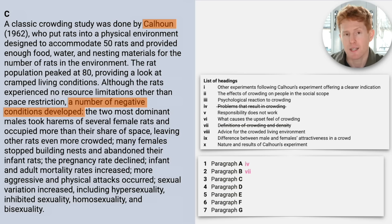A classic crowding study was done by Calhoun, 1962, who put rats into a physical environment designed to accommodate 50 rats and provided enough food, water, and nesting materials for the number of rats in the environment. The rat population peaked at 80, providing a look at cramped living conditions. Although the rats experienced no resource limitations other than space restriction, a number of negative conditions developed. The two most dominant males took harems of several female rats and occupied more than their share of space, leaving other rats even more crowded. Many females stopped building nests and abandoned their infant rats. The pregnancy rate declined. Infant and adult mortality rates increased. More aggressive and physical attacks occurred. Sexual variation increased, including hypersexuality, inhibited sexuality, homosexuality, and bisexuality.